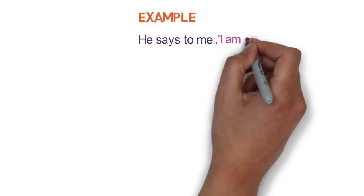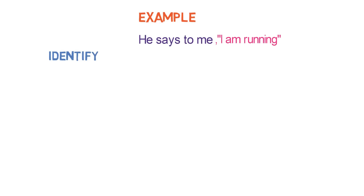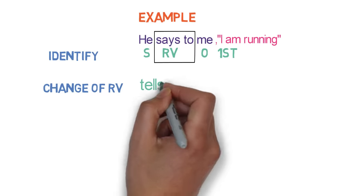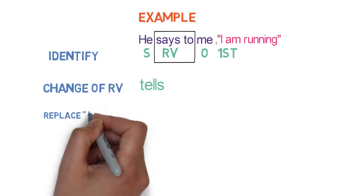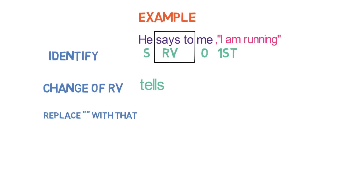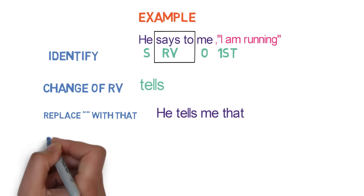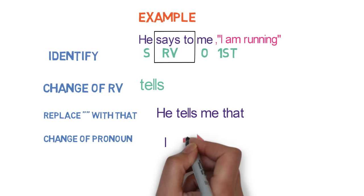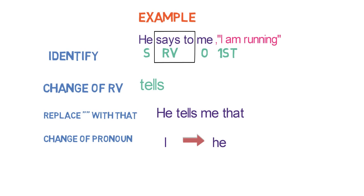Let's look into one more example: 'He says to me, I am running.' Step 1 — he is the subject, me is the object, says to is the reporting verb. As says to is in present form, we will not check the tense. Step 2 — says to converts to tells. Step 3 — 'He tells me that.' Step 4 — I will be converted to he. Step 5 and 6 — these steps are omitted as the reporting verb is in present tense. Final indirect speech: He tells me that he is running.